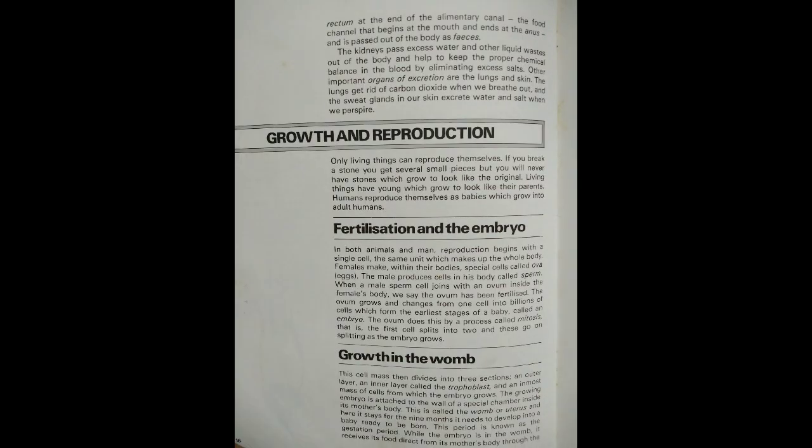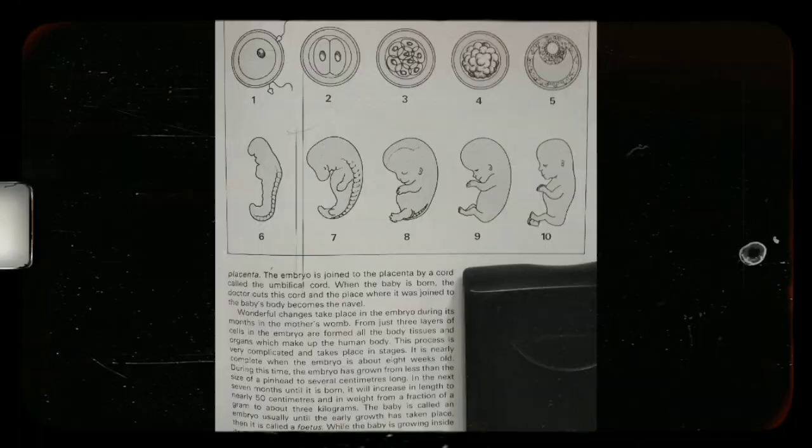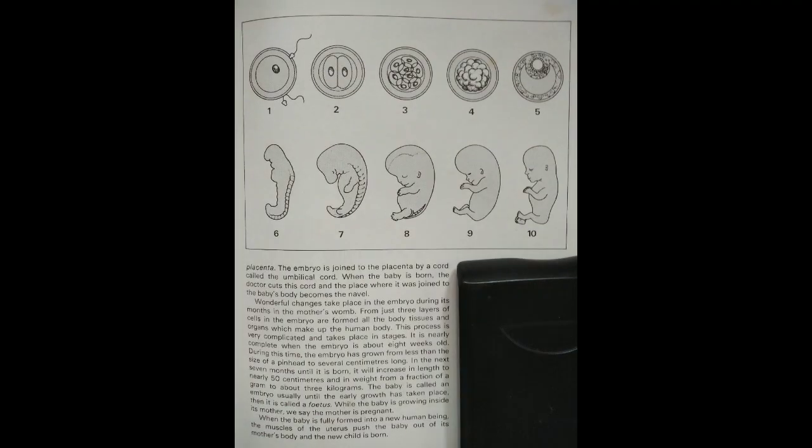Only living things can reproduce themselves. If you break a stone, you get several small pieces, but you will never have stones which grow to look like the original. Living things have young which grow to look like their parents. Humans reproduce themselves as babies which grow into adult humans. After the male sperm fertilizes the female egg, the nucleus divides until an embryo begins to form.